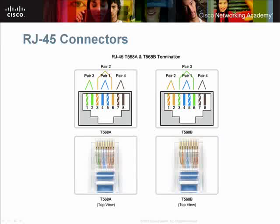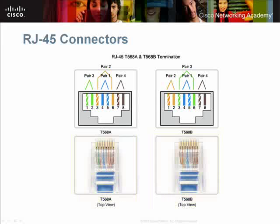Let's look at the cables that connect devices. UTP, or unshielded twisted pair, is the most universally used copper cable in a LAN. UTP cables have two male ends called RJ45 connectors, one on each end of the cable. When viewed from the top, the RJ45s have pins numbered from 1 through 8. It is important to know this orientation so you can identify the different types of UTP cables.